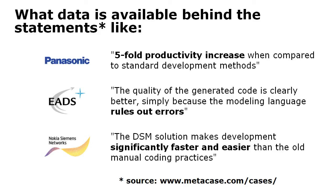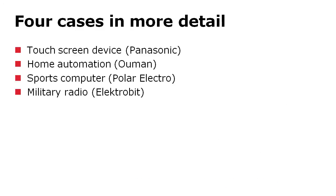Most cases like these are mostly anecdotes because people can't trace how companies like EADS actually measured that they have minimized errors. Luckily, some companies have provided data and we will look at these four cases in more detail.